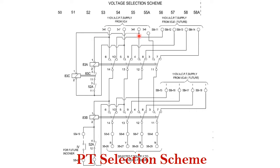At TB number three, with connections six, seven, eight, and nine, you have R, Y, and B phase for incomer one AC supply PT. Similarly for the terminal block named SB at points eleven, twelve, thirteen, and fourteen, you have R, Y, and B phase coming for incomer number two.